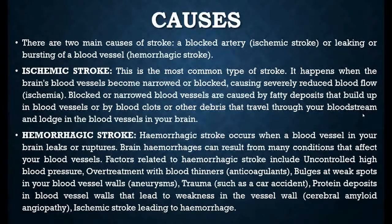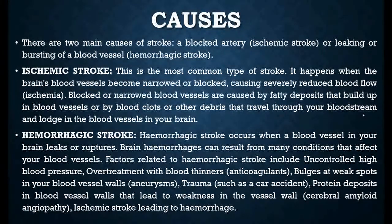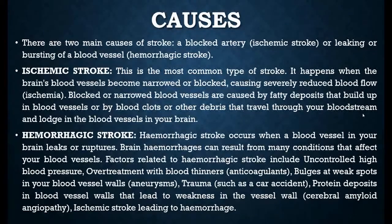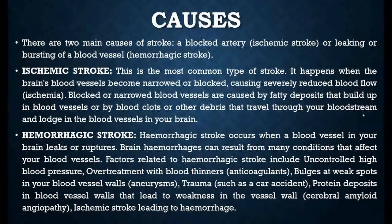If we talk about the causes, there are two types of stroke. One is ischemic stroke, which is a blocked artery, and the other is hemorrhagic stroke, which is the bursting of a blood vessel. Ischemic stroke is the most common type, where blood vessels get narrowed or blocked due to a blood clot or plaque, and this narrowing leads to the stroke condition.